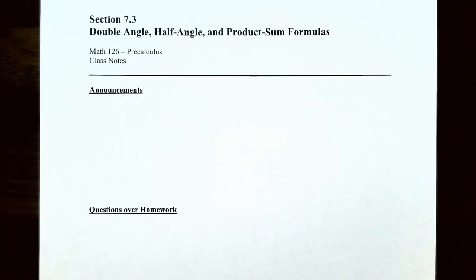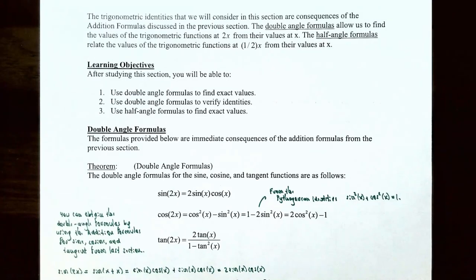Hi everyone, it's Professor Primitant. In this video we're going to talk about the double angle formulas. The trigonometric identities we're going to consider in this section are consequences of the addition formulas discussed in the previous video. The double angle formulas allow us to find the values of the trigonometric functions at 2 times x from their values at x.